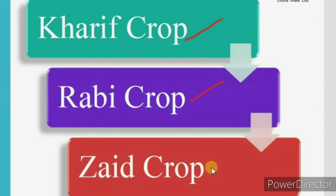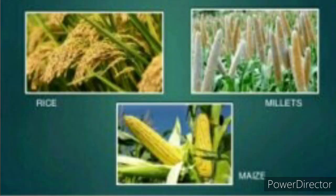The next point is types of crops. There are three types of crops: kharif crop, rabi crop, and zaid crop. Kharif crops are sown at the beginning of monsoon, that is between June and July. They need much water, which is why we sow them before monsoon, and they are harvested by September or October. Examples of kharif crops are corn and rice.